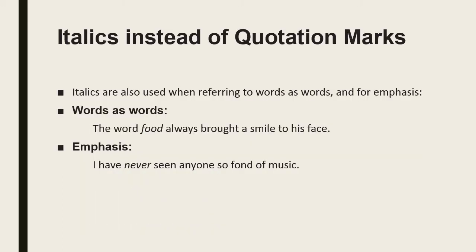In general, the larger work is italicized and the smaller part is enclosed in quotation marks. Italics are also used when referring to words as words or for emphasis. For example: The word food always brought a smile to his face — here 'food' is italicized for emphasis. I have never seen anyone so fond of music — here 'never' is italicized to show emphasis.